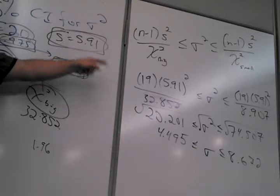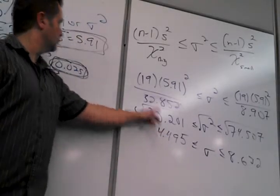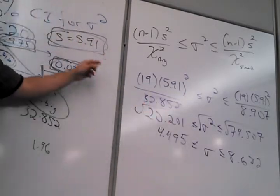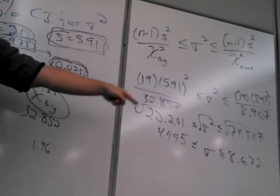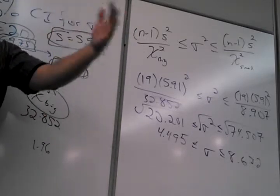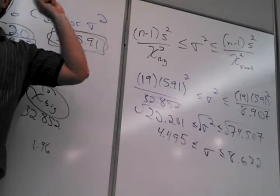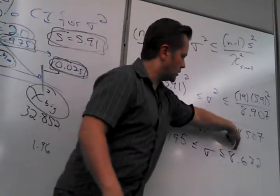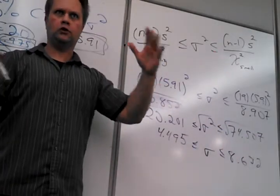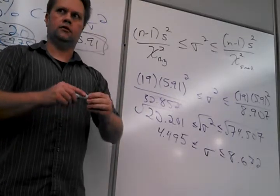Notice that 5.91 is not right in the middle of that interval — it's roughly 1.5 away from one side and 2.7 from the other. Of course it's not going to be right in the middle, because my picture is not symmetric — it's skewed to the right. That's why this side is always further away. It kind of goes with the visual of what the distribution looks like.